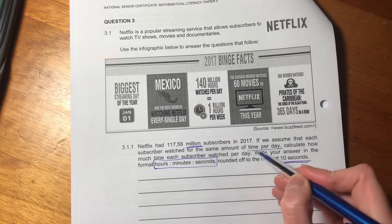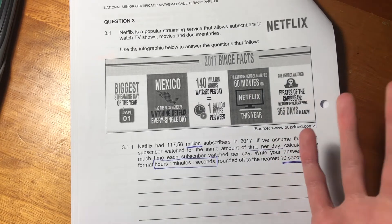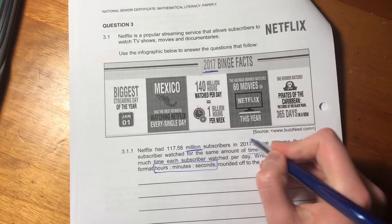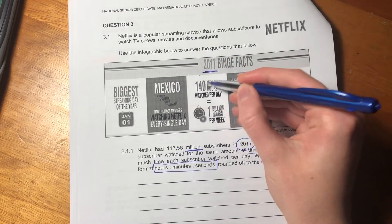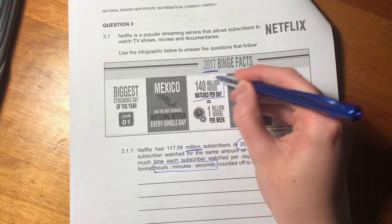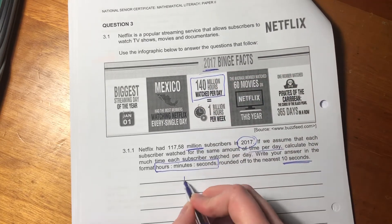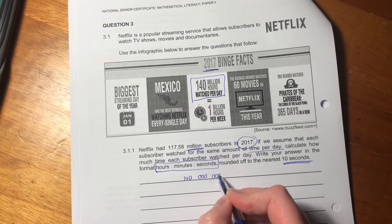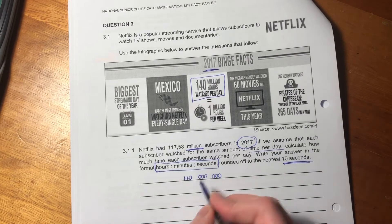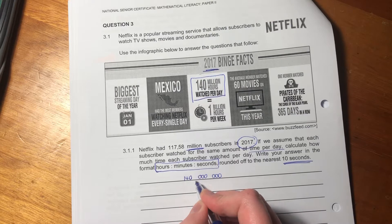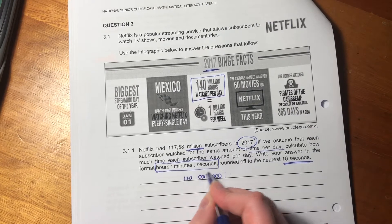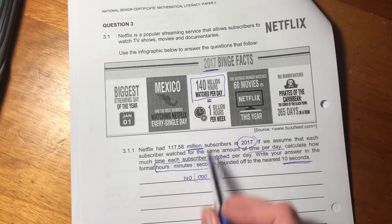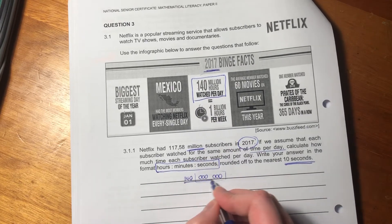But first of all, let's see how much time was actually spent watching Netflix. In 2017, so we know we're working in the same year. It says 140 million hours watched per day. So we know 140 million, one, two, three, one, two, three. Million has six zeros, importantly, six zeros after the number.